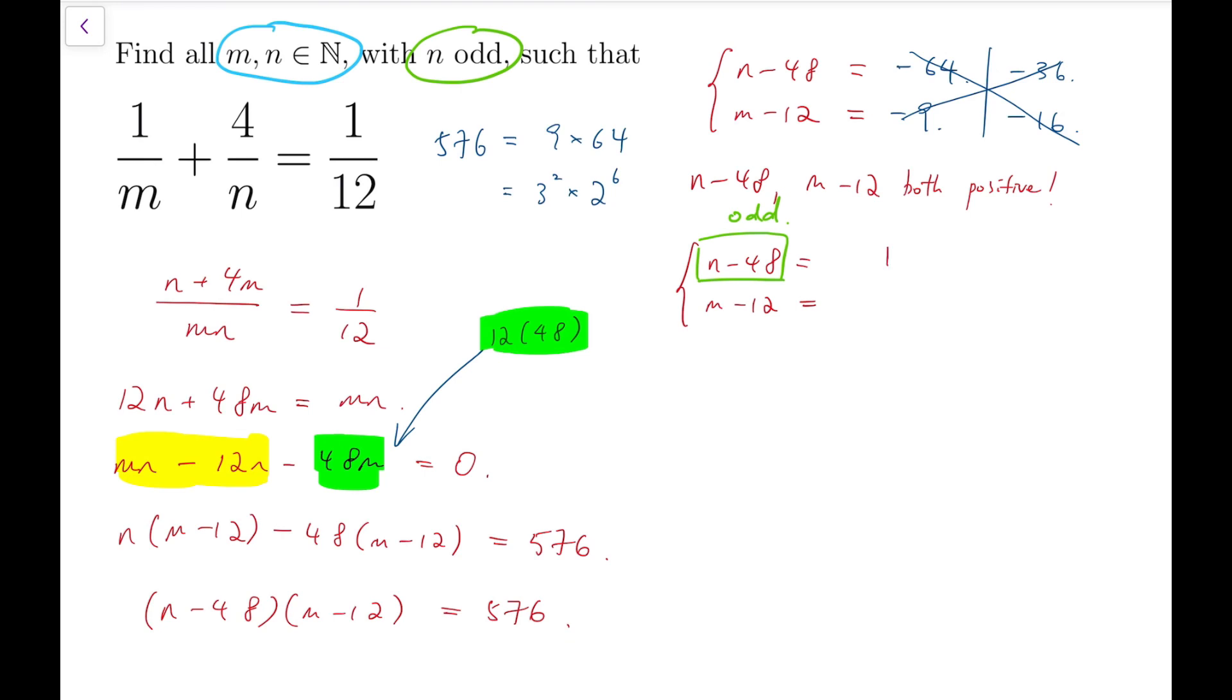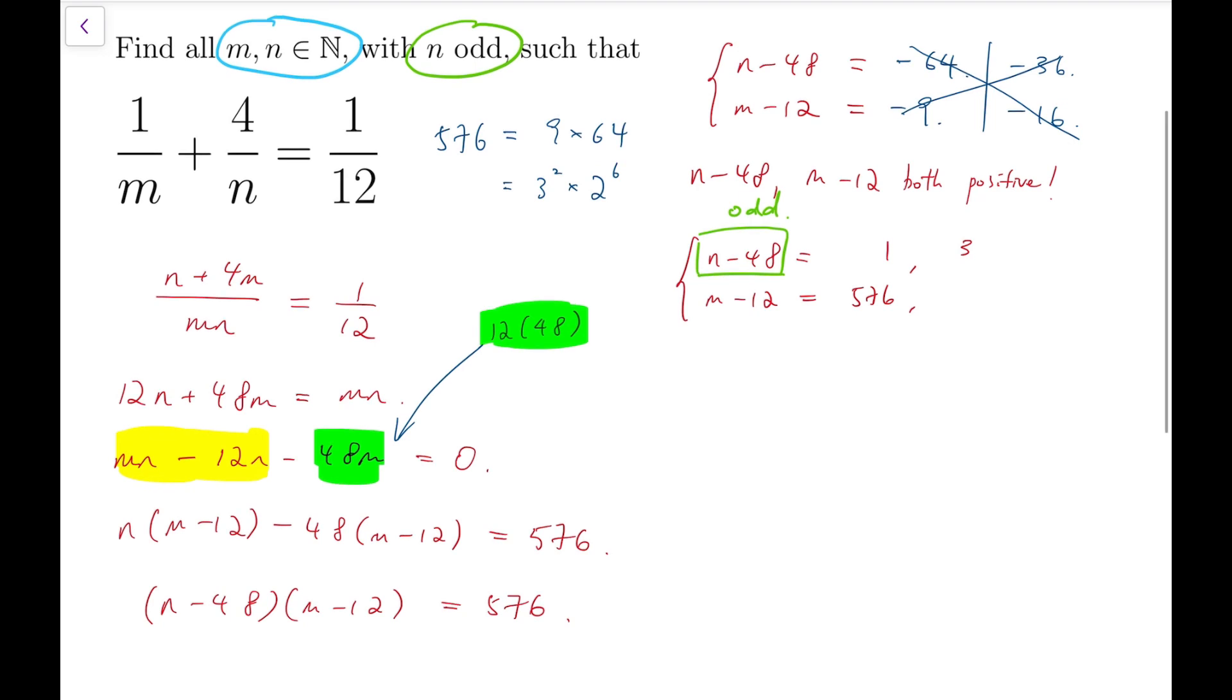So, when n minus 48 is 1, n minus 12 has to be 576. When n minus 48 is 3, the other part has to be 192. While if n minus 48 is 9, the other part has to be 64.